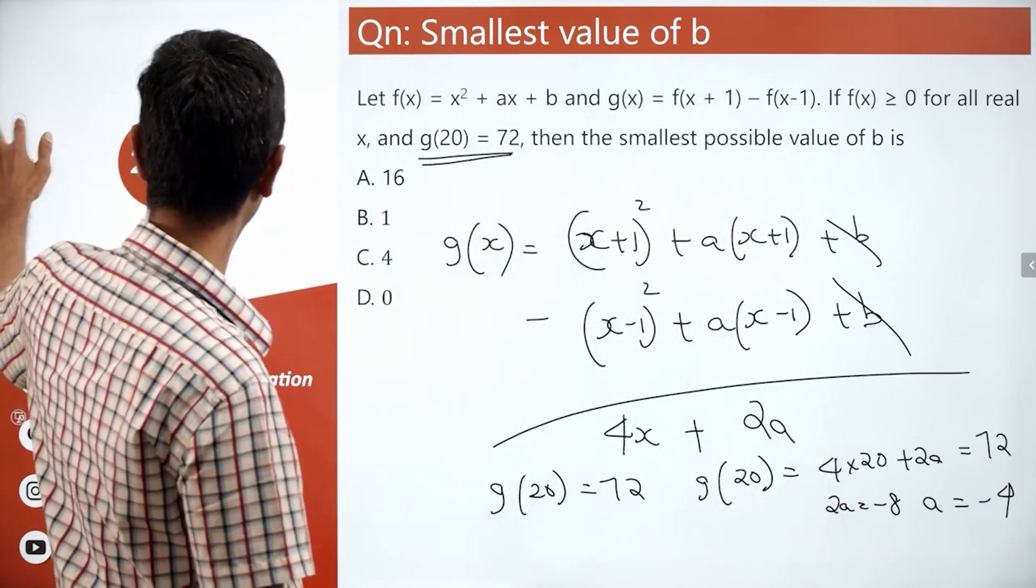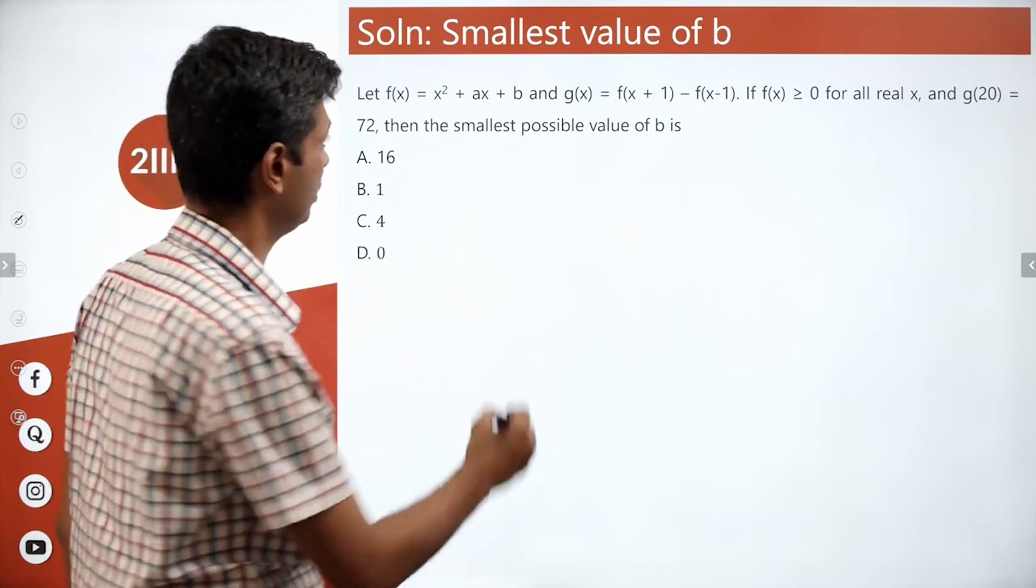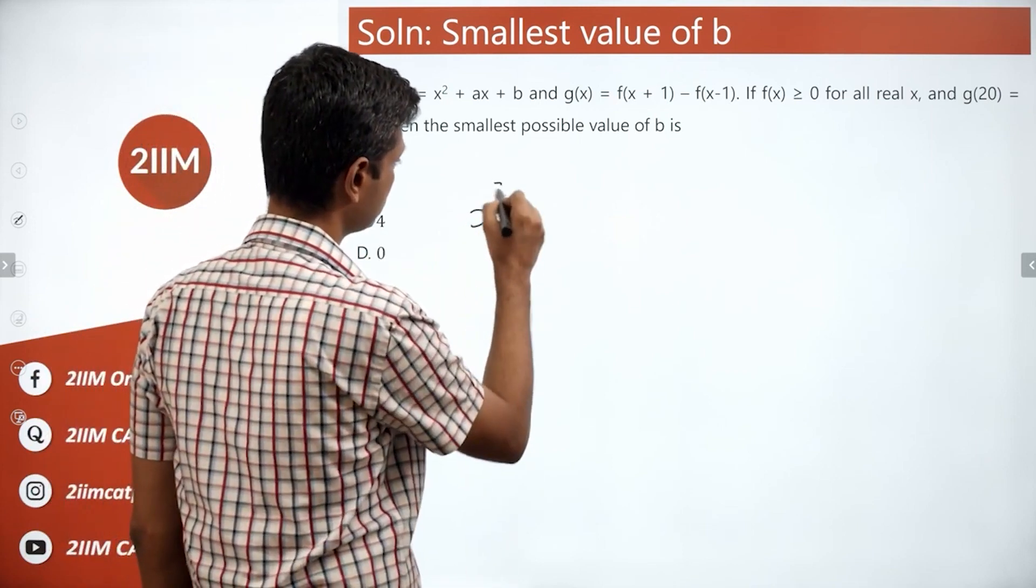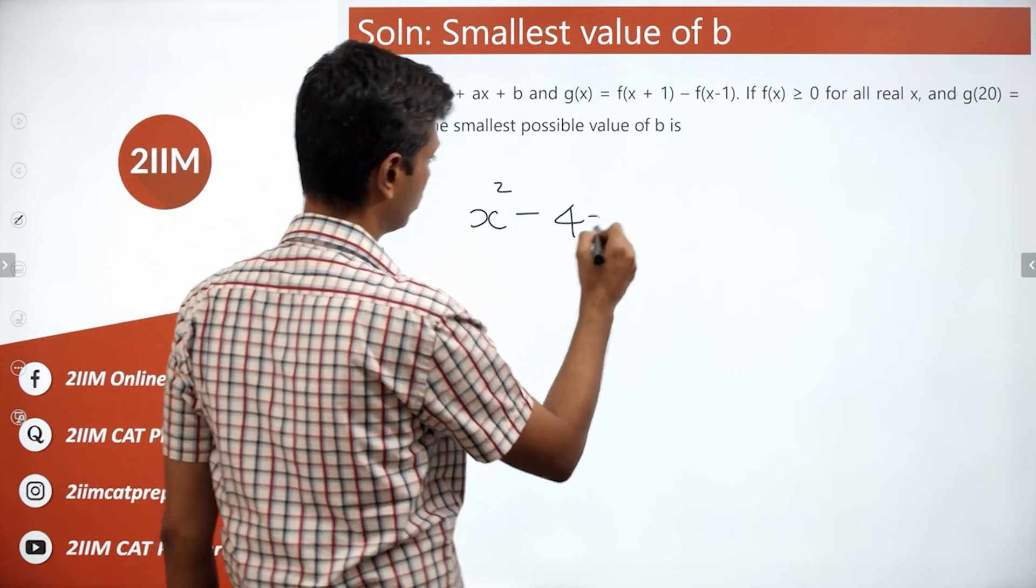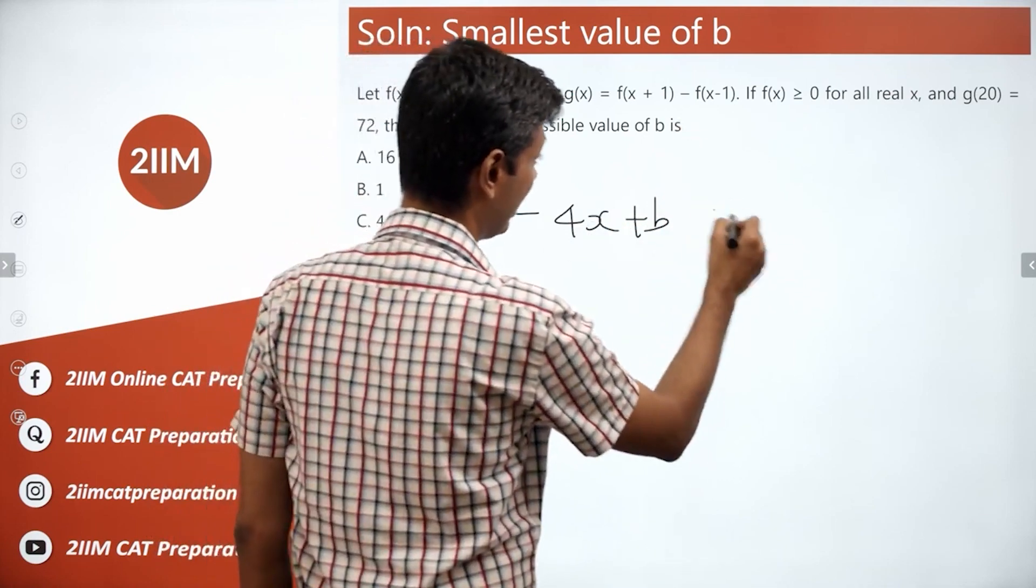Lovely. Now let's come back to the remaining part. a = -4. We want to find the smallest possible value of b. So x² - 4x + b, this is f(x). We know f(x) ≥ 0.